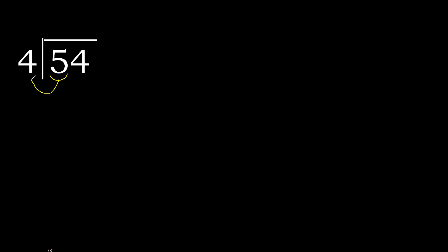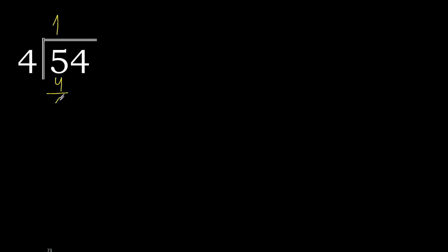54 divided by 4. 5 is not less, therefore work with 5. 4 multiplied by which number is nearest to 5 but not greater? 4 multiplied by 2 is 8 — 8 is greater. Therefore 1. 4 multiplied by 1 is 4. 4 is not greater. 5 minus 4 is 1.